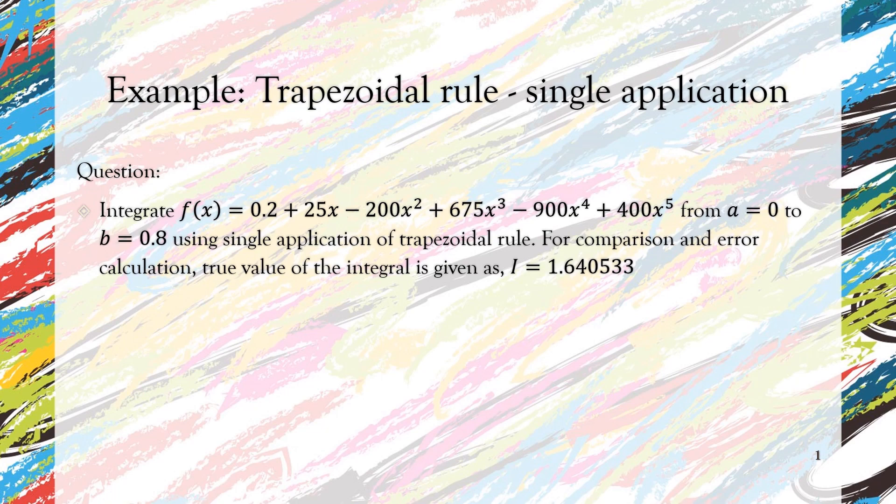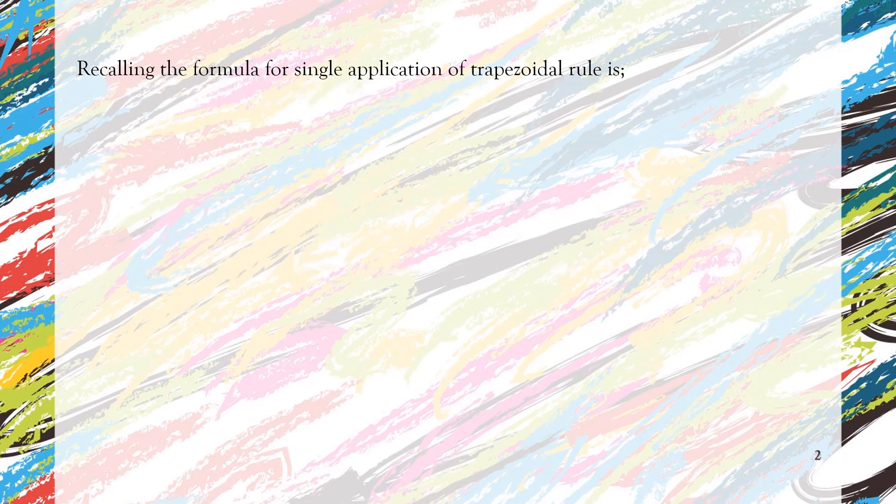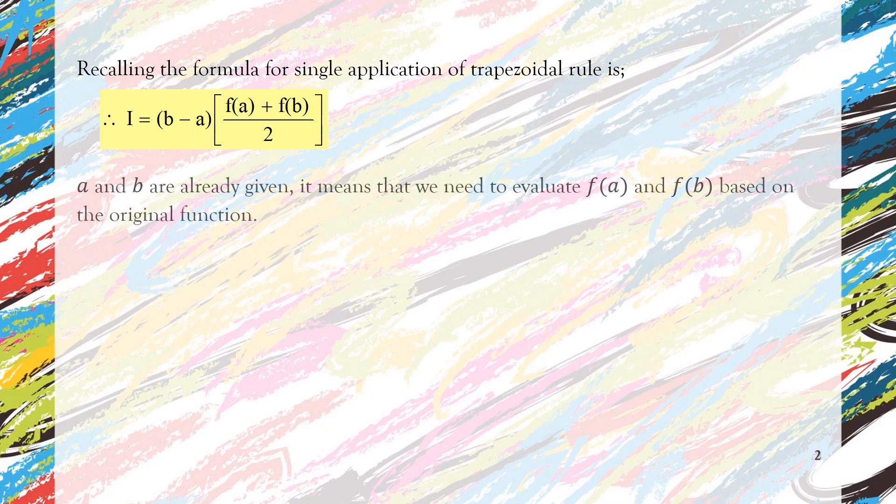Let's start by recalling the formula for single application of trapezoidal rule. So that is the formula of the integral: I = (b - a) × [f(a) + f(b)] / 2. Since a and b are already given, we know that a is 0 and b is 0.8.